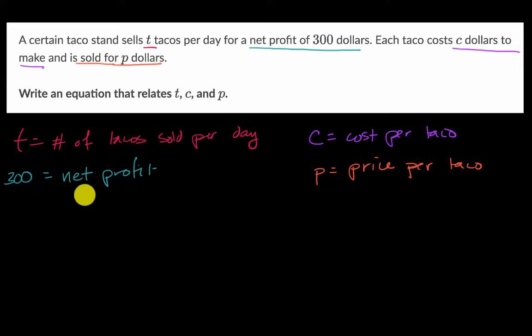So how do we figure out what the net profit is going to be? Well, we could write it this way. Net profit is going to be equal to the total amount of money that you bring in minus the total amount of money that you have to spend. So what is going to be the total amount that you bring in? Well, it's going to be the number of tacos you sell times the price per taco. So T times P, this is how much money you're bringing in.